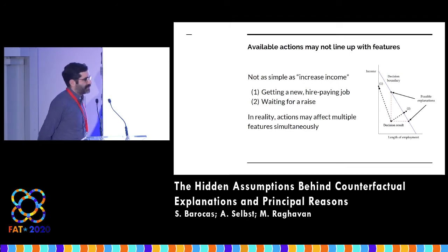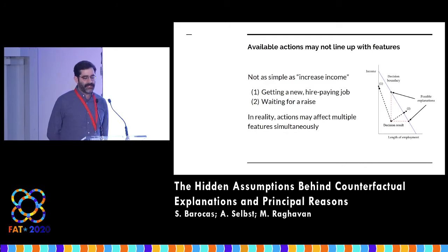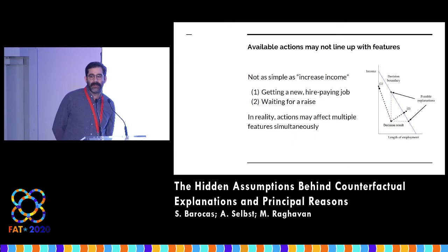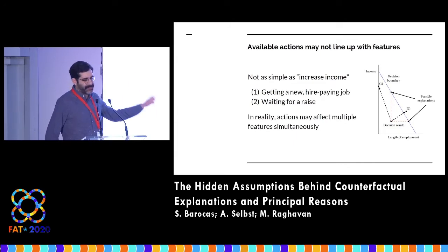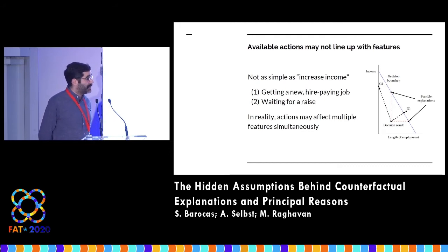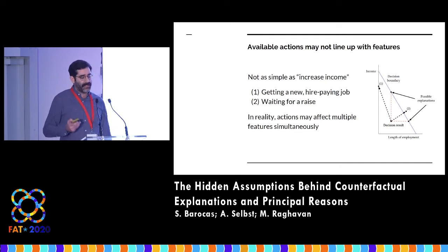For example, here's a very simple credit scoring model which is based on income and length of employment. You might imagine that you want to choose between telling someone to make more money or to have a longer length of employment. But the available actions would be something like getting a higher paying job, which would simultaneously affect both their income and their length of employment — and in fact, in this case, could even increase their income beyond what you told them, but actually push them back in terms of their length of employment. This is a very simple way of showing not only that features may be non-independent, but they can actually make it difficult to isolate the feature you want to change given the limited set of actions you actually have in the real world.